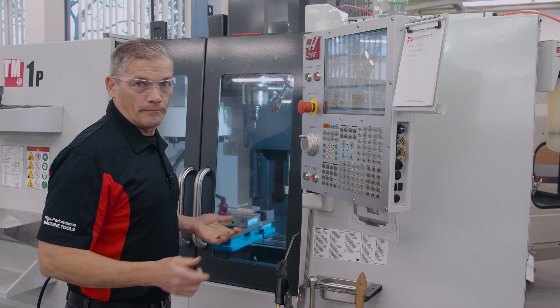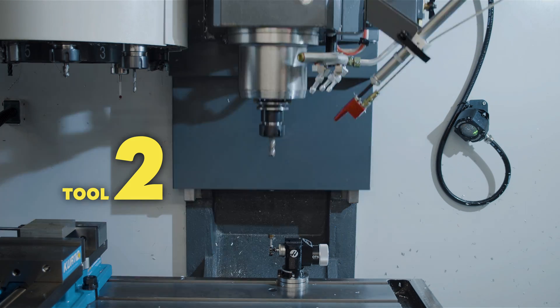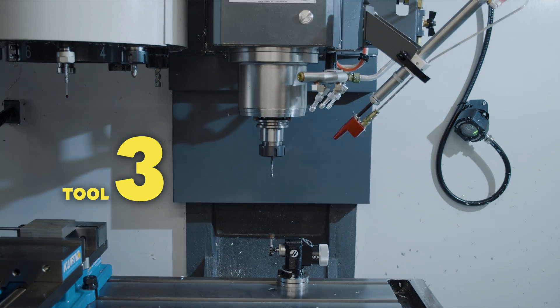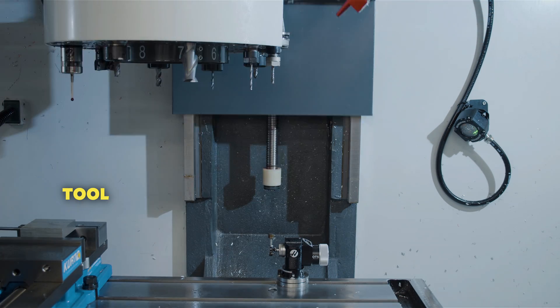And away we go. The machine changes to tool two to start and begins the same type of probing check we just saw earlier. Except now it will check all five tools automatically one after the other.